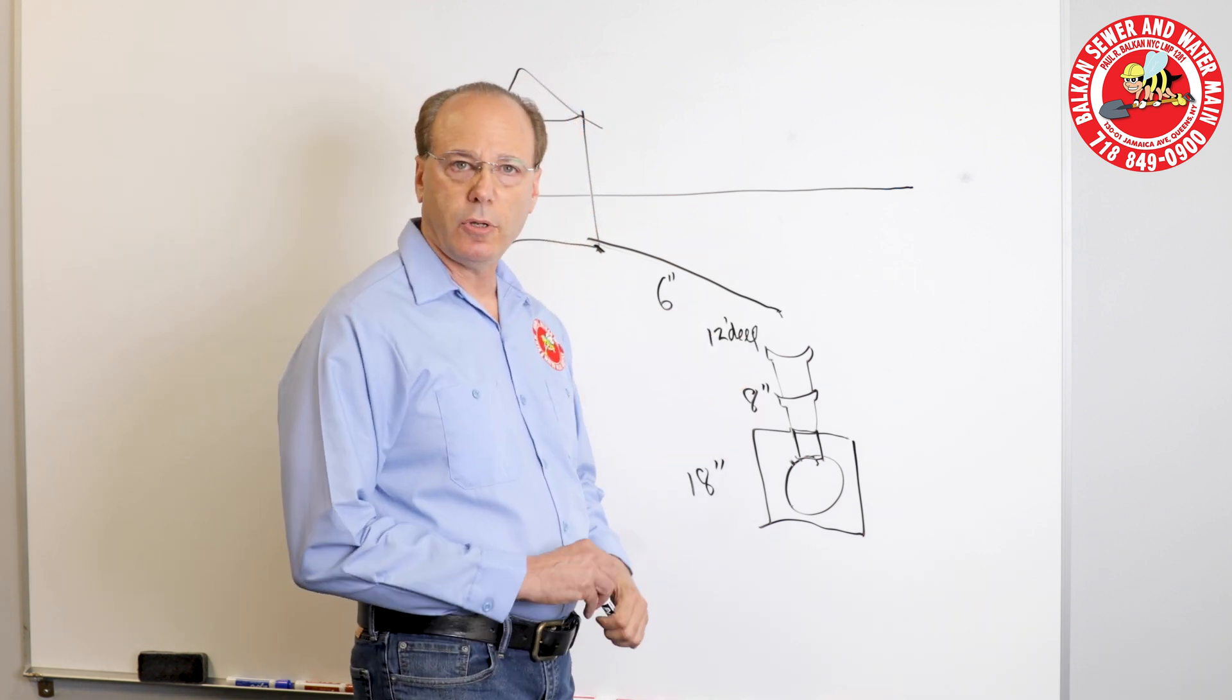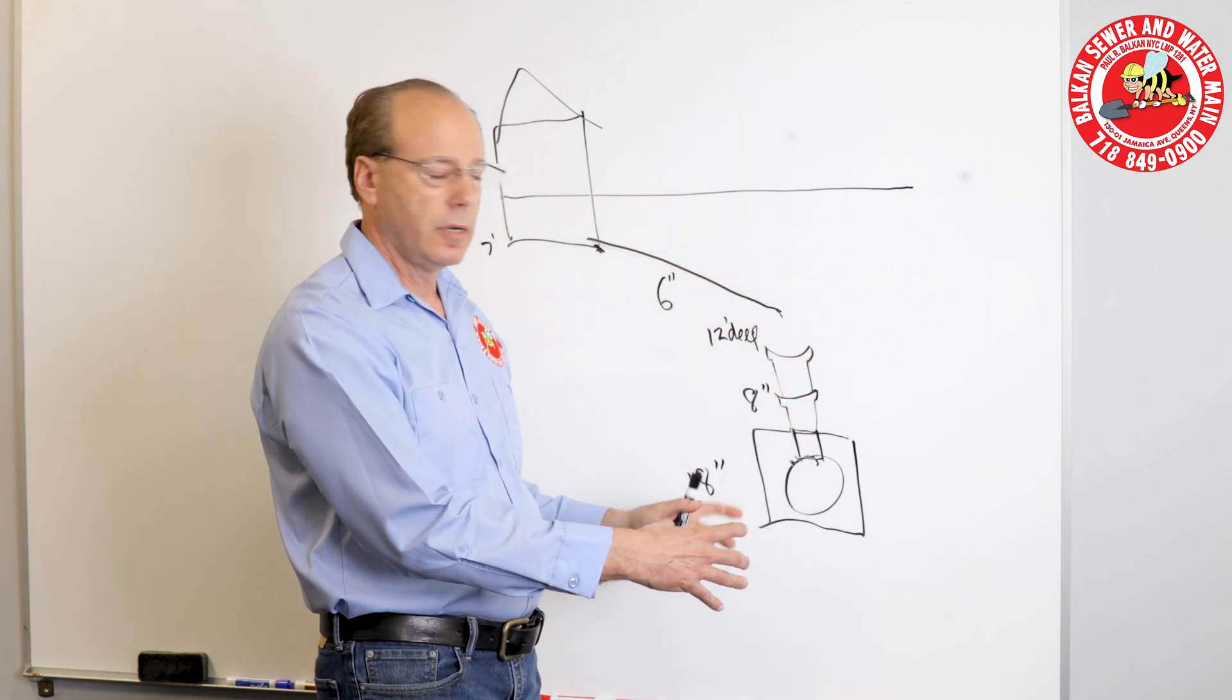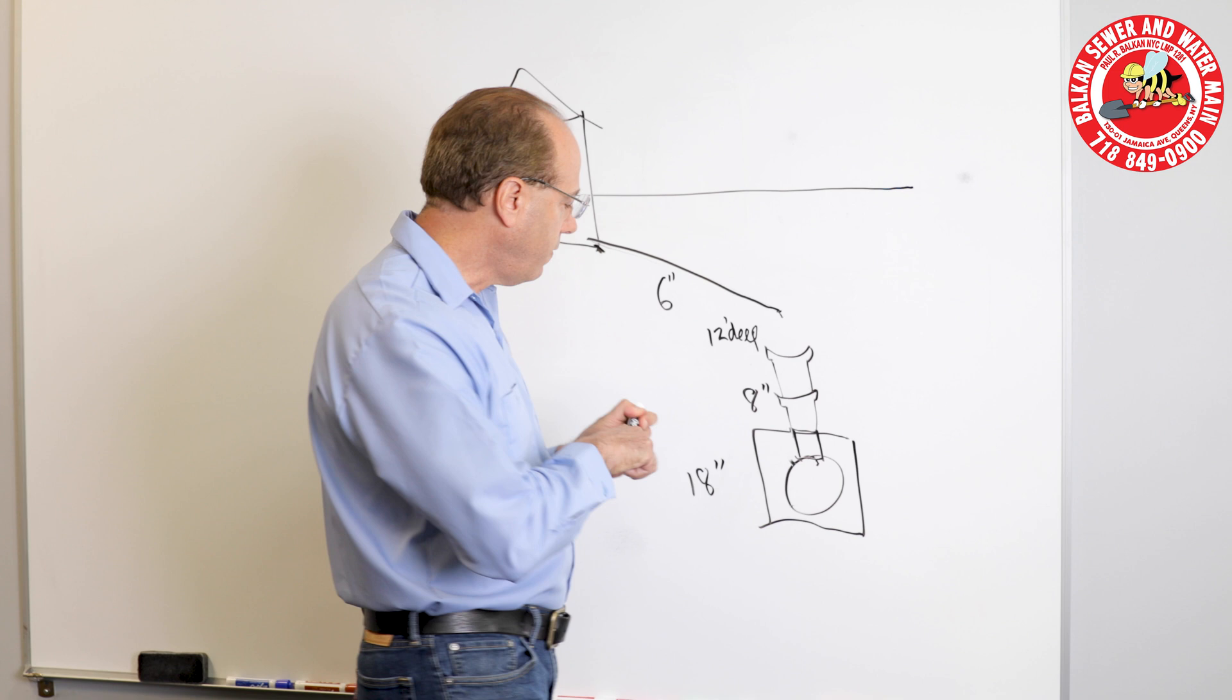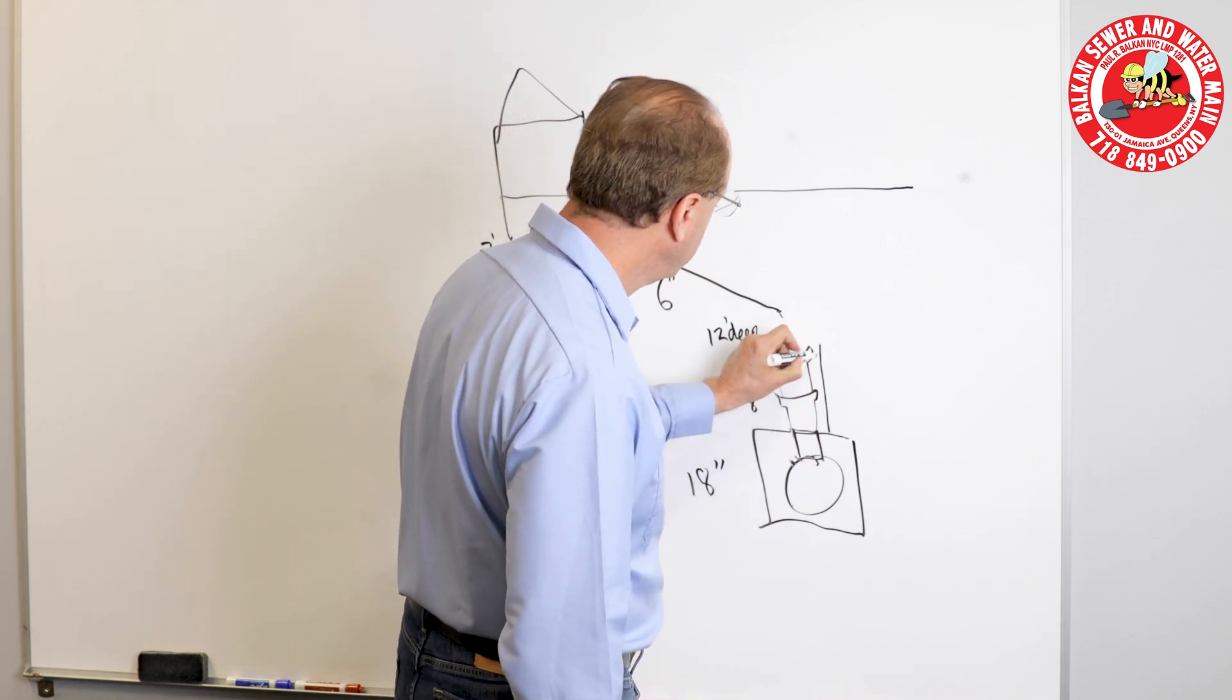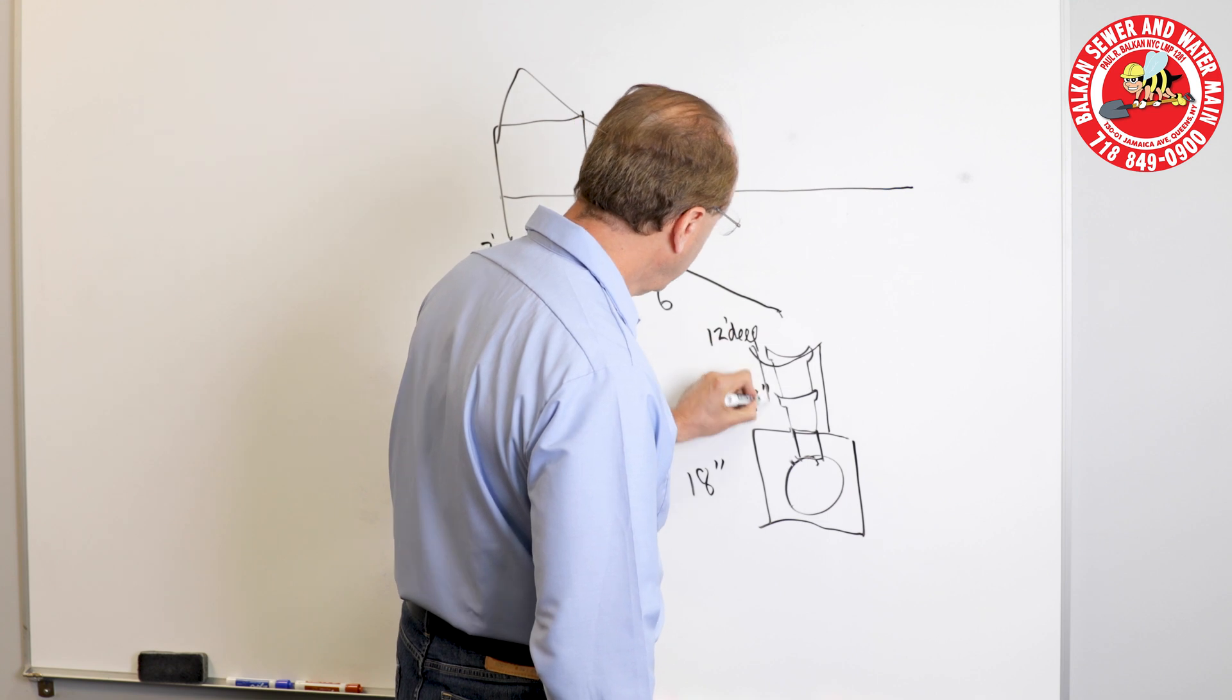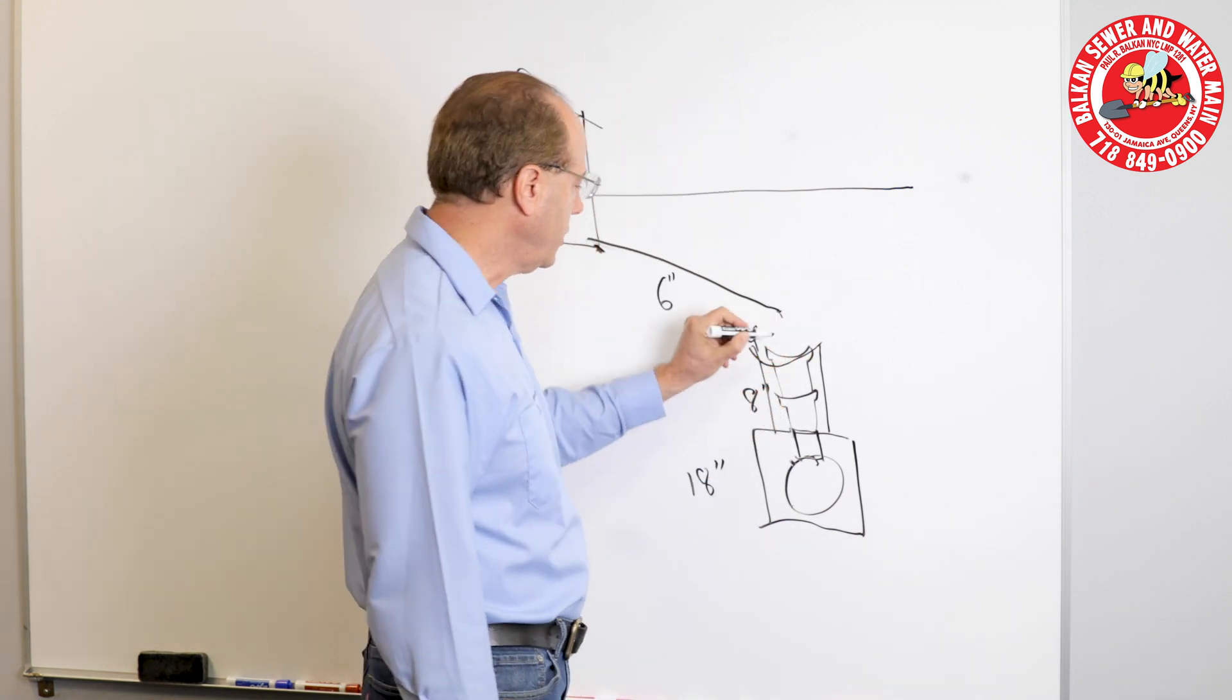After the pipe is installed, it has to also be encased in concrete with rebar. So a form is put in around this pipe, and then more ready mix is added to encase it in concrete.